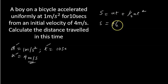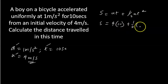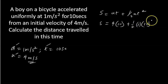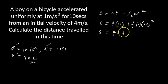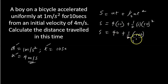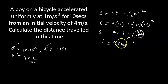So S = U × T + ½ × A × T² = 4 × 10 + ½ × 1 × 10² = 40 + ½ × 100 = 40 + 50 = 90 meters. Thank you. See you in our next class, where we'll be solving more questions relating to this. Thank you, and do have a nice time.